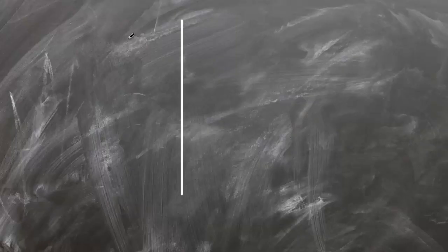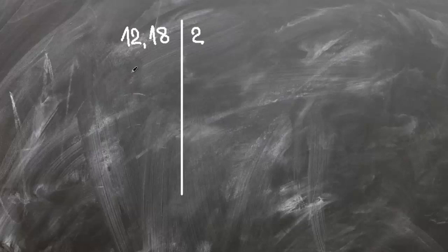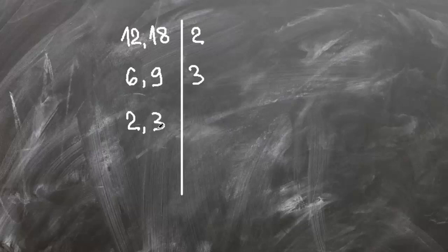In this example we will find greatest common factor for 12 and 18. Both 12 and 18 can be divided by 2, so we get 6 and 9. 6 and 9 can be divided by 3, so we get 2 and 3. 2 and 3 cannot be divided by any number except 1, so greatest common factor for 12 and 18 is 2 times 3, which is 6.